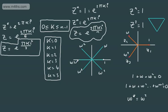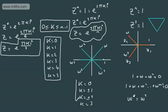Sometimes we measure from negative π to positive π instead. In that case, for the six roots we would take k equal to 0, k equal to plus or minus 1, k equal to plus or minus 2, and then k equal to 3. You may see this approach used to ensure answers are between negative π and positive π.